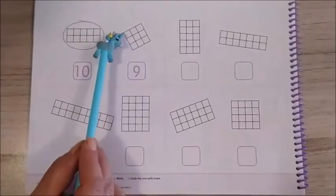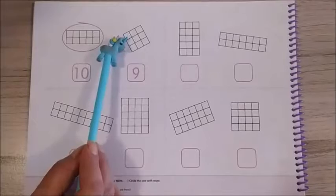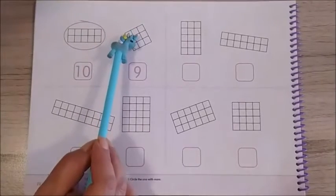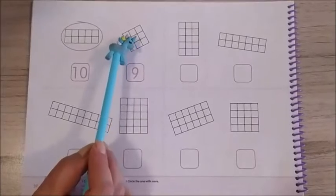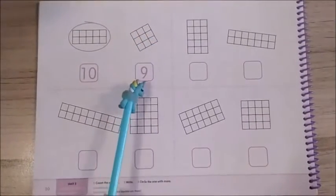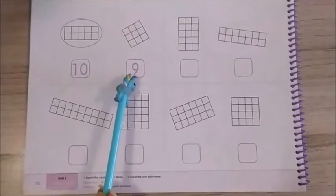Now, let's count this. One, two, three, four, five, six, seven, eight, nine. Nine little squares.